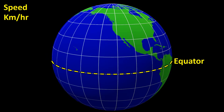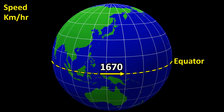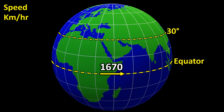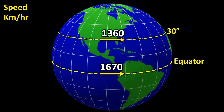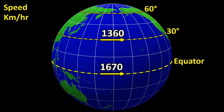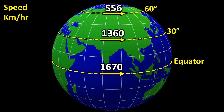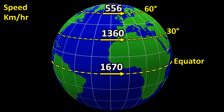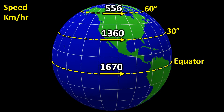At the equator, the surface of the Earth moves at about 1,670 km per hour. At 30 degrees latitude, it is around 1,360 km per hour, and at 60 degrees latitude, it drops to just 556 km per hour. So the farther you move from the equator, the slower the surface speed becomes.